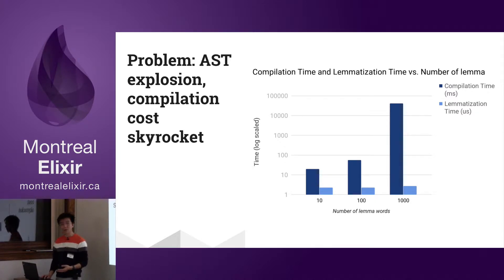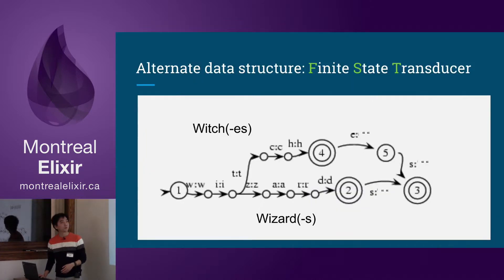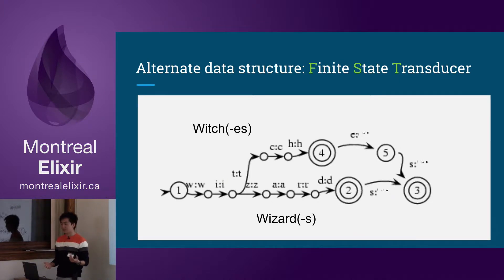The reason I didn't include 10,000 is because it doesn't even finish on my computer. But you can see that when we actually run the program, because of how well the Erlang BEAM VM is, the lemmatization runtime stays almost the same. So what do we do? We can't use that data structure, we can't use pattern matching even. Pattern matching fails when you have a lot of patterns to match, beyond what Elixir is designed for. Elixir was never designed for matching 50,000 words using this kind of scenario.